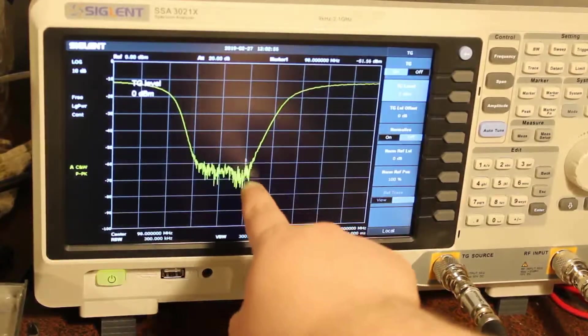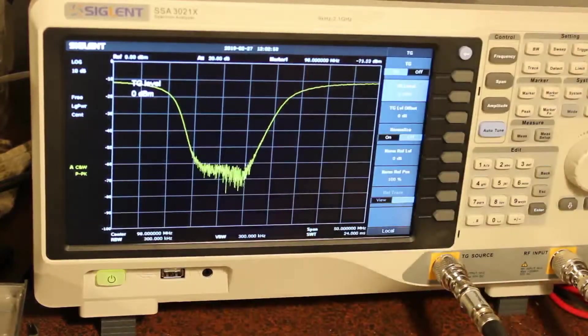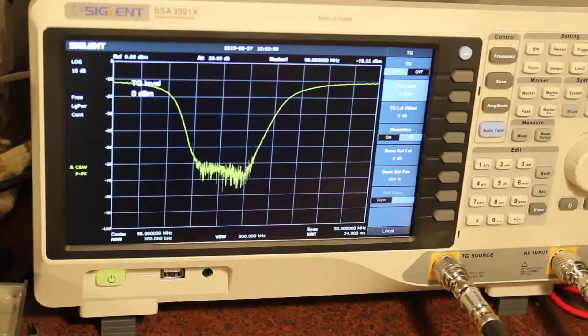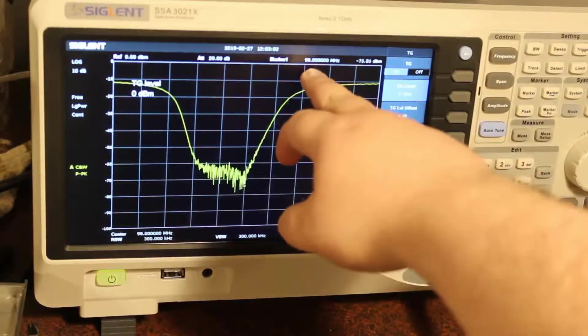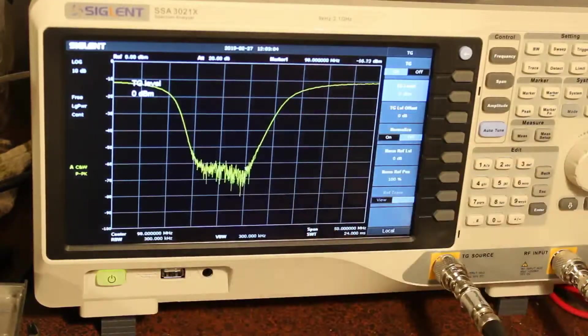So this mark right here, mark number one, it's going to be hard to see on the video. It is what it is. But right now, it is at 98 MHz. And you can see it's basically at the high end of this notch filter.